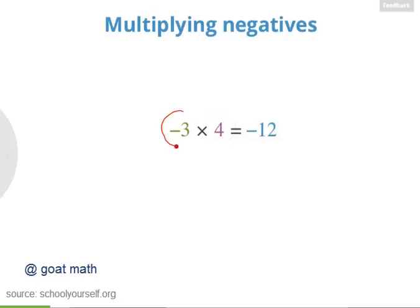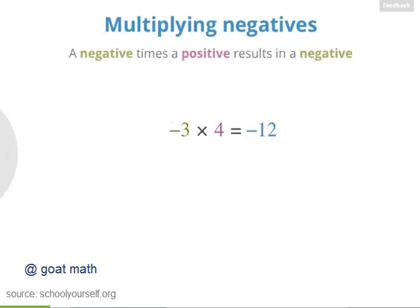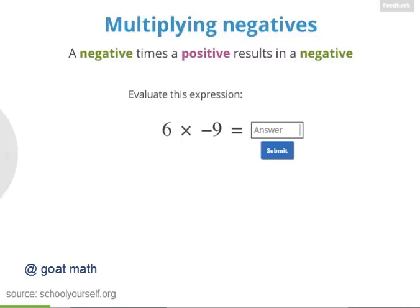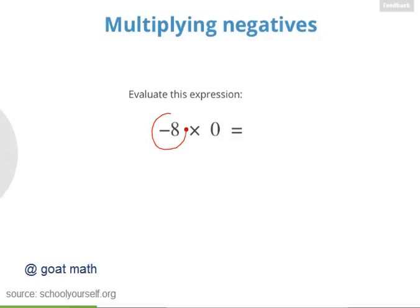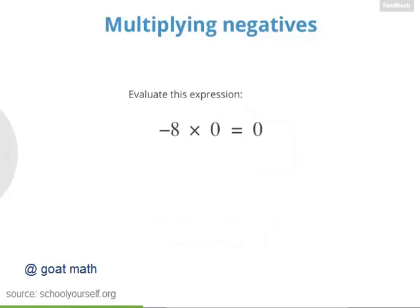Multiplying a positive number by a negative number is just like multiplying two positive numbers, except for the minus sign. In general, a negative times a positive always results in a negative. While 6 times 9 equals positive 54, 6 times negative 9 equals negative 54. Next, any number times 0 equals 0, even when that number is negative.